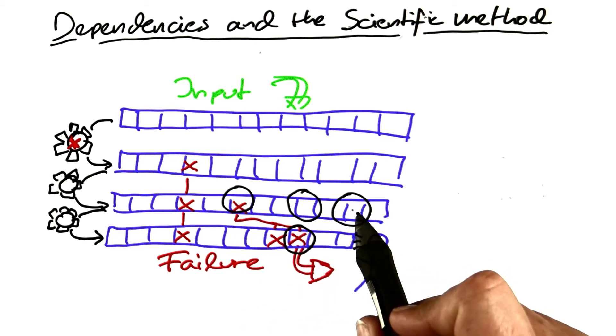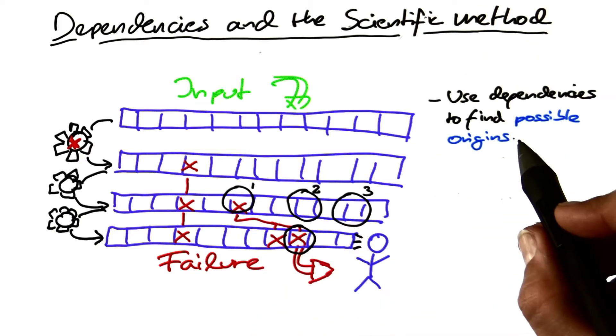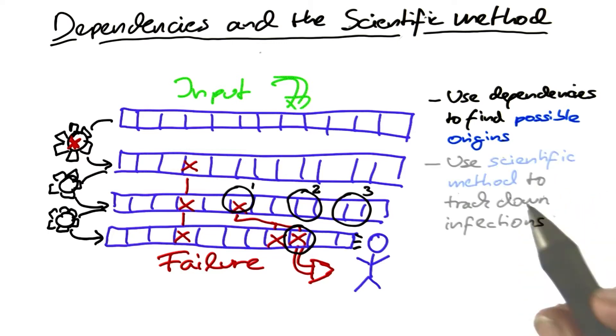And one out of these three, or at least one out of these three, should contain the infection that we're looking for. So we use dependencies to find possible origins for each infection.